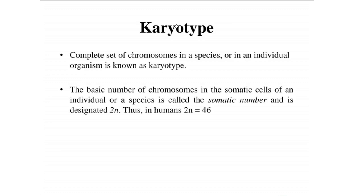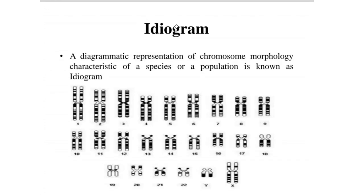Karyotype: the complete set of chromosomes in a species or individual organism is known as the karyotype. The basic number of chromosomes in the somatic cell of an individual or species is called the somatic number, designated as 2N. Thus in humans, 2N equals 46. Ideogram: a diagrammatic representation of chromosome morphology characteristics of a species or population is known as an ideogram.